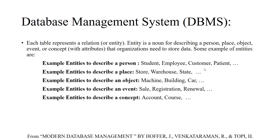When we talk about tables inside databases, these tables represent what we call a relation or entity. An entity is a name we use to describe a person, place, object, or concept that an organization wants to store information about. Examples of person entities include student, employee, customer, and patient. Depending on the organization, we may have different entities — for example, in a university we have students, faculty, and employees.